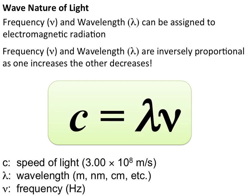We know that frequency and wavelength are assigned to specific types of electromagnetic radiation. We know that those are inversely proportional. We also know that all light travels at the same speed in a vacuum, which is the speed of light.